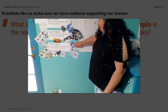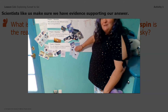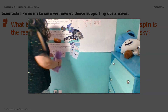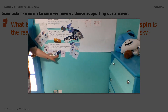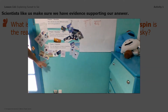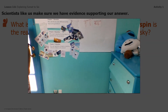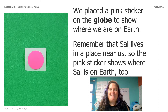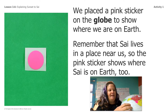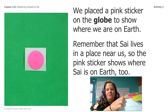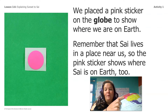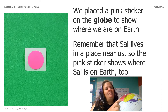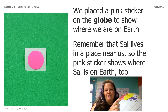We have our sky mural. We have our investigation with Mount Nose and when we were spinning. We have our horizon pictures. We have that video we saw of Earth's spin. We have what we learned from our book, what spins. So how can you use this evidence to help us answer our question? Many lessons ago, we put this pink sticker right here on the globe to show where we are on Earth. And because Sai also lives in a place near us here in Seattle, this shows where Sai is on Earth too.